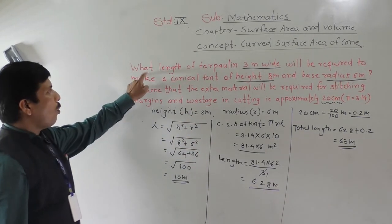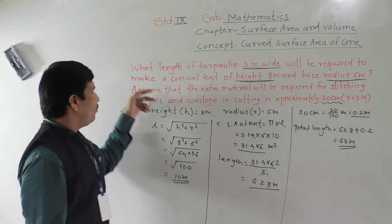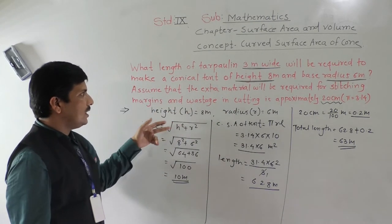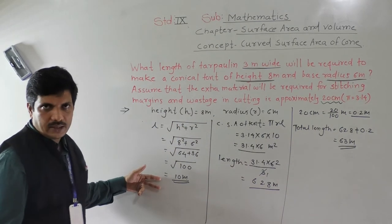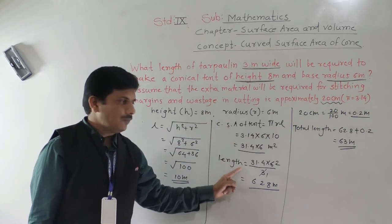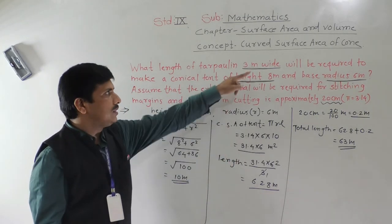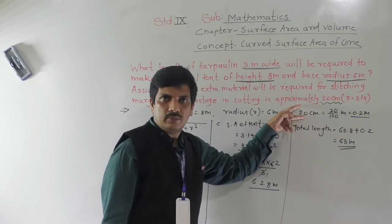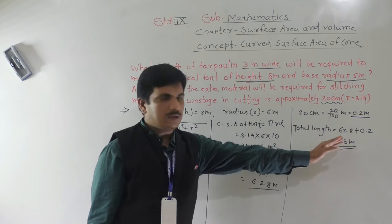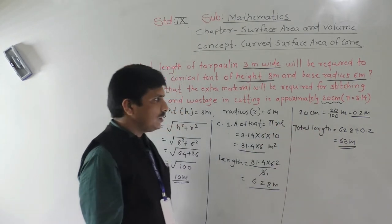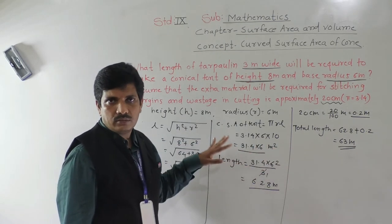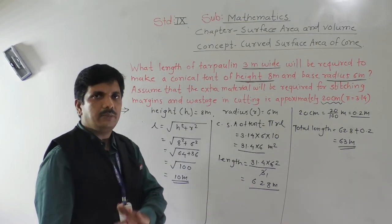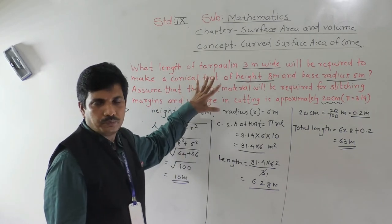Once again, to summarize: width of tarpaulin is 3 meters, height of conical tent is 8 meters, base radius is 6 meters. With height and radius we find slant height. With slant height and radius we find curved surface area. Then with the given width we find the length. One more thing was given — extra 20 centimeters for margins — which we convert to 0.2 meters and add. So the final answer is 63 meters. We need to take care of unit conversions.